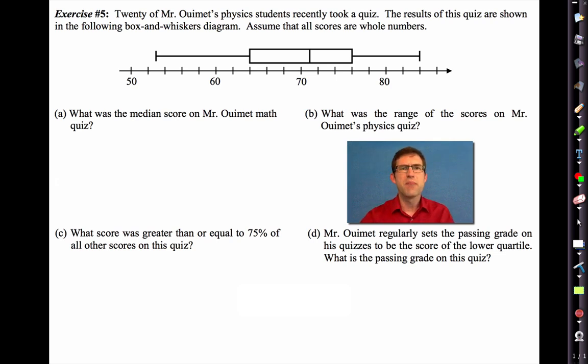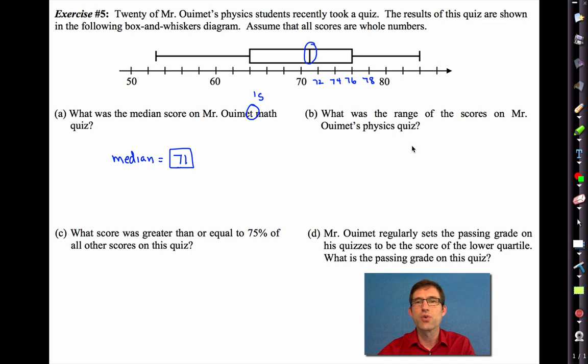All right. Let's do it. Well, letter A, what was the median score on Mr. WeMet's math quiz? Well, the median score is given right here. But what is that? Well, these go by twos, right? This is 72, 74, 76, 78. So the median is clearly sitting at 71. It is physics, after all. What was the range of the scores on Mr. WeMet's physics quiz? Well, we know that the range is the high score minus the low score. So the highest score was 84, and the lowest score was 53. So the range will be 84 minus 53, or 31.